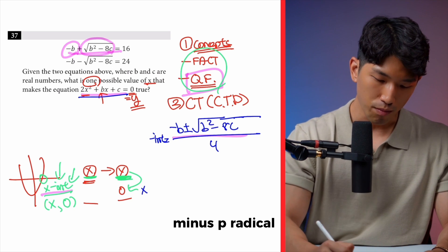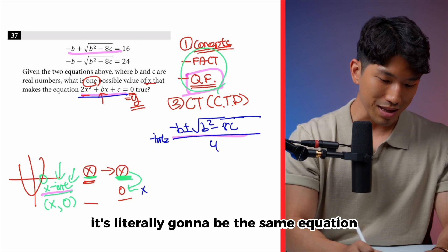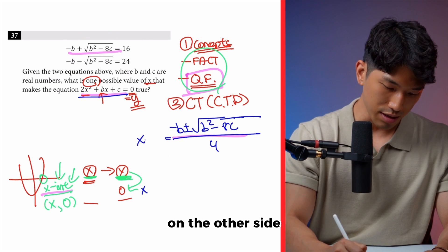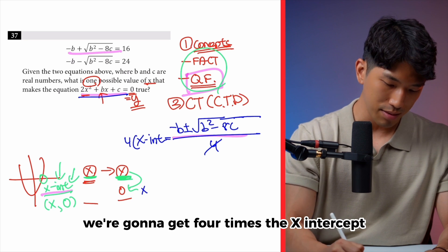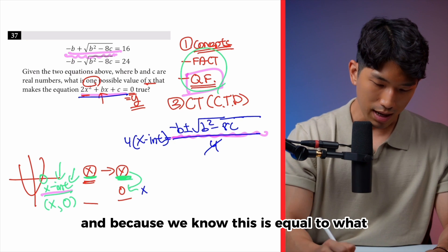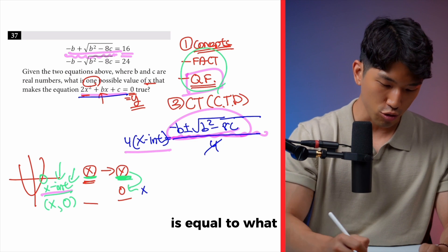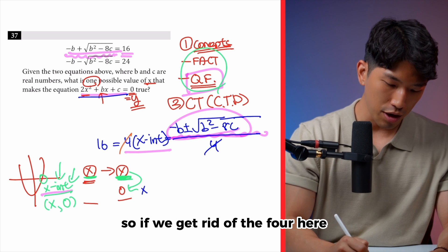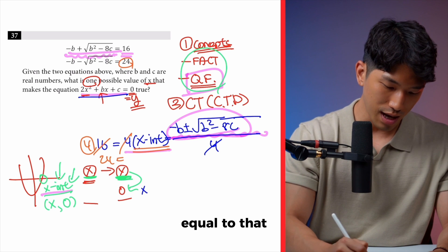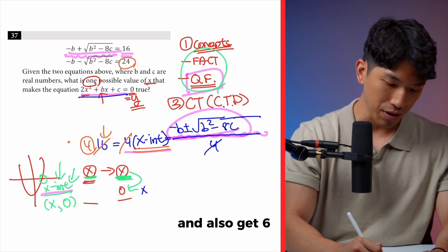We have negative b radical and negative b radical — the same thing on the inside. So if we move the 4 to the other side, it's literally the same equation as the top one. That gives us 4 times the x-intercept on the other side, which is the same as what the question provides. Because we know that equals 16, that means 4 times the x-intercept equals 16 — so the x-intercept equals 4. Using the second equation, 24 divided by 4 gives us 6.